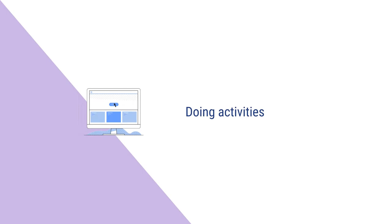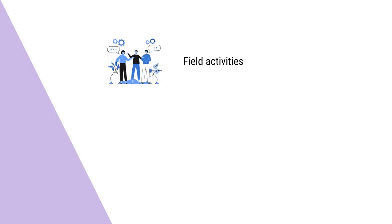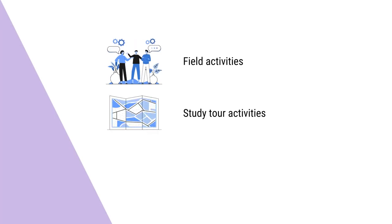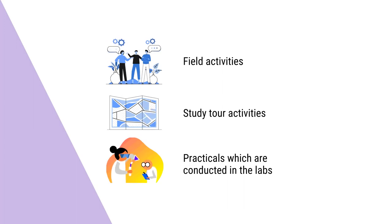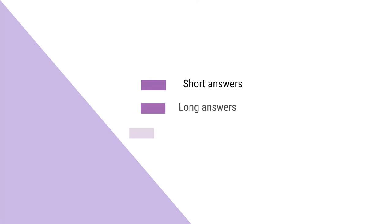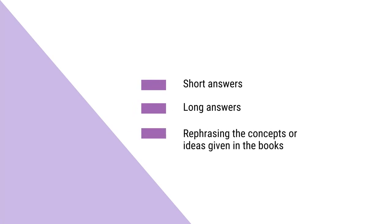Now we have doing activities. The doing activities are those activities which demand a learner to use the skills, the abilities, the theoretical knowledge — the theoretical knowledge is applied in these activities. These activities could be the field activities, the productive activities, the practicals which are conducted in the labs. All these are doing activities. We also have writing activities. Writing activities demand the learners to make use of their writing skills. They could be short answers, they could be long answers, they could be reflecting on the concepts or ideas given in the books.